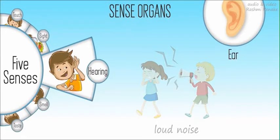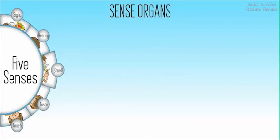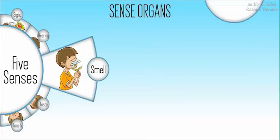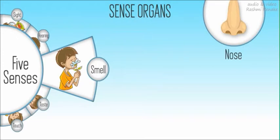Next, smell. We use our nose to smell things. We can identify many different kinds of smells. Some are sweet, flowery, or clean. Some smell bad, nasty, and unpleasant.